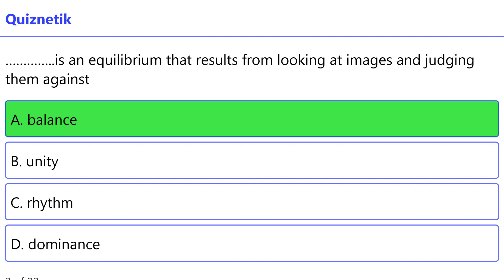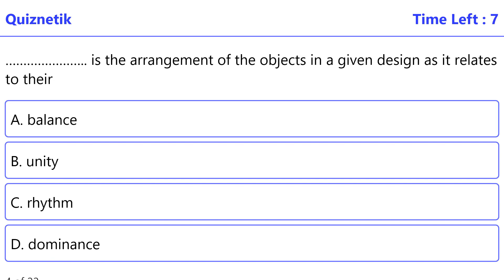The correct option is A, balance. Balance is the arrangement of the objects in a given design as it relates to their visual weight within a composition. The correct option is A, balance.